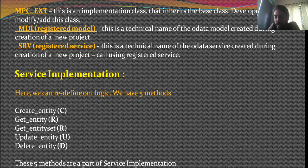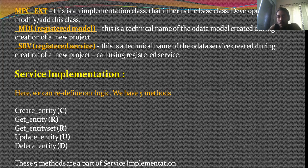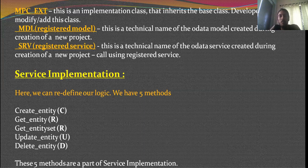Finally, you have the model — the technical name of your data service created when you create a new project and activate it. At that point, the MDL creates your runtime artifacts. You also have underscore SRV, which is the technical service name. This is the name your project is identified with on the front end. For example, if you created a purchase order project named 'PO_ORDER', you would use 'PO_ORDER_SRV' on the front end to instantiate or trigger your project in the back end.